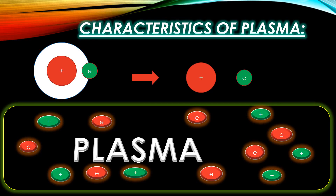Let's talk about the characteristics of plasma. As you know, plasma consists of ionized gases. Therefore, plasma conducts heat and electricity, due to many unique properties that are different from solid, liquid, and gas.